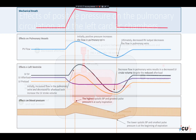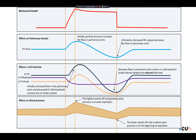In these graphs, we will see the effects on the left side over time. The first graph shows the mechanical breath — pressure over time — where at the initiation of inspiration, the pressure goes up to the peak inspiratory pressure before it plateaus and remains at that plateau level for the duration of inspiration.